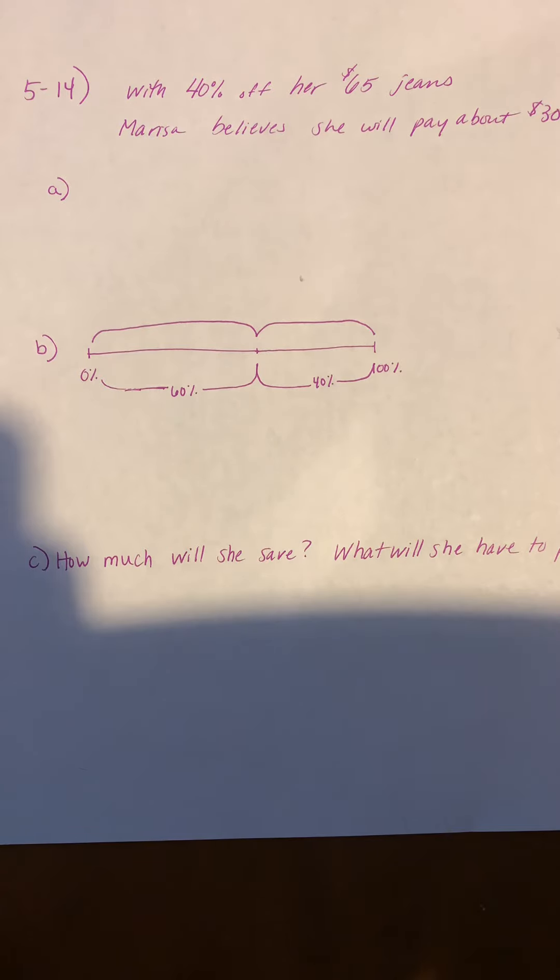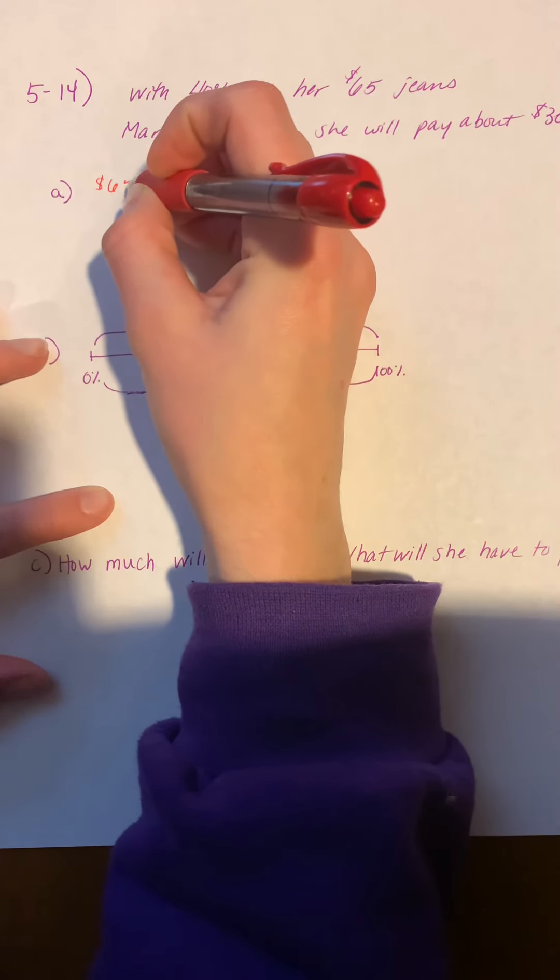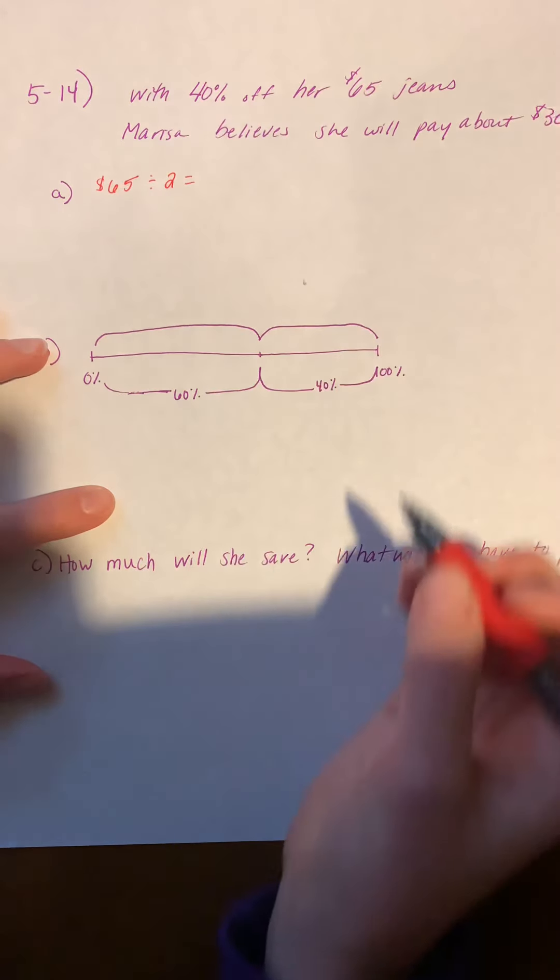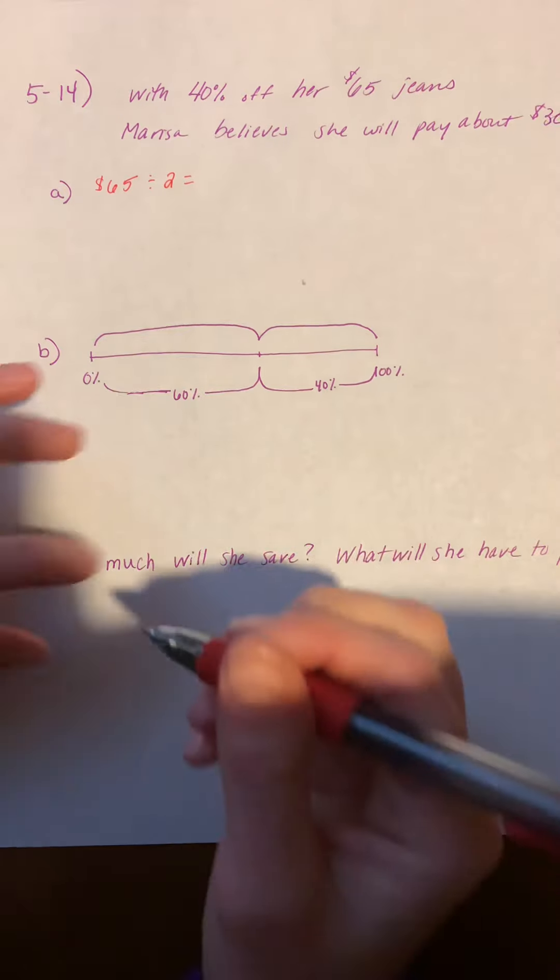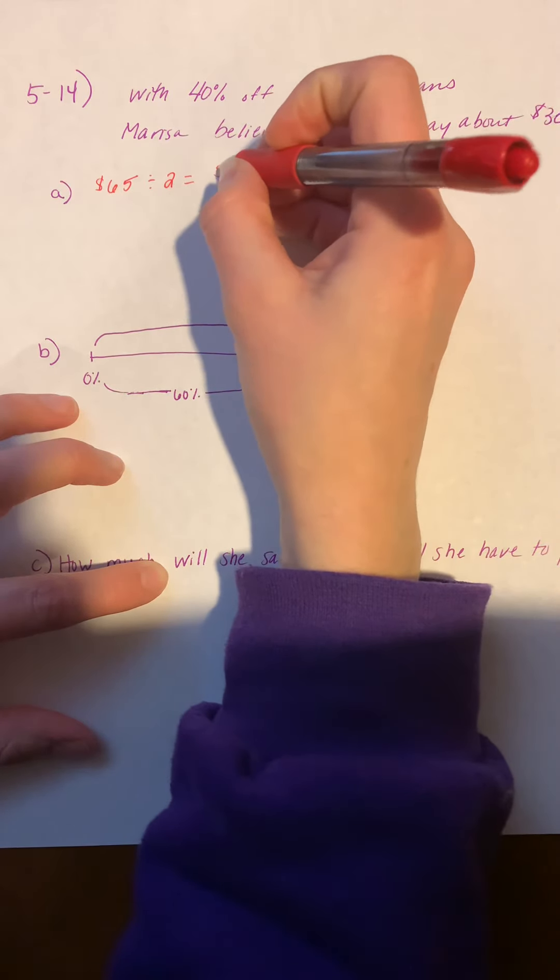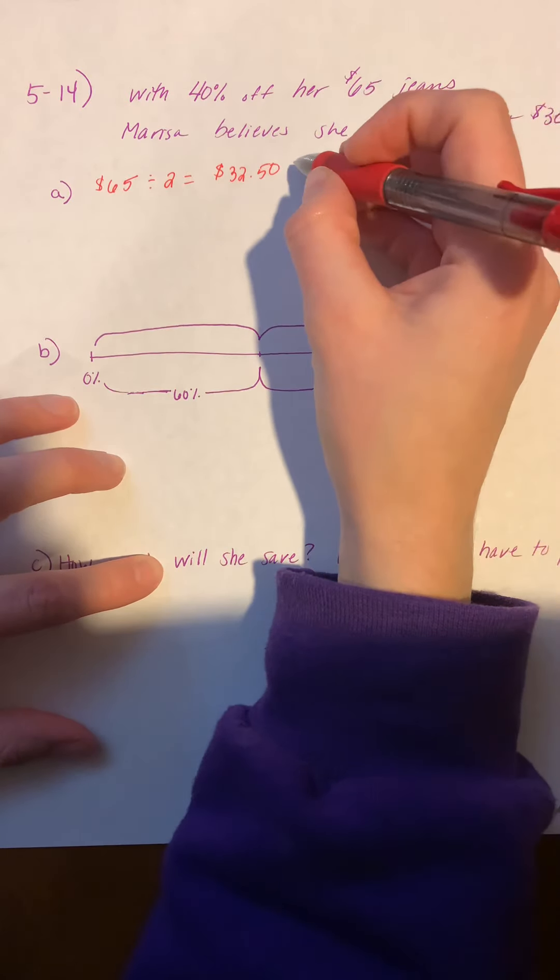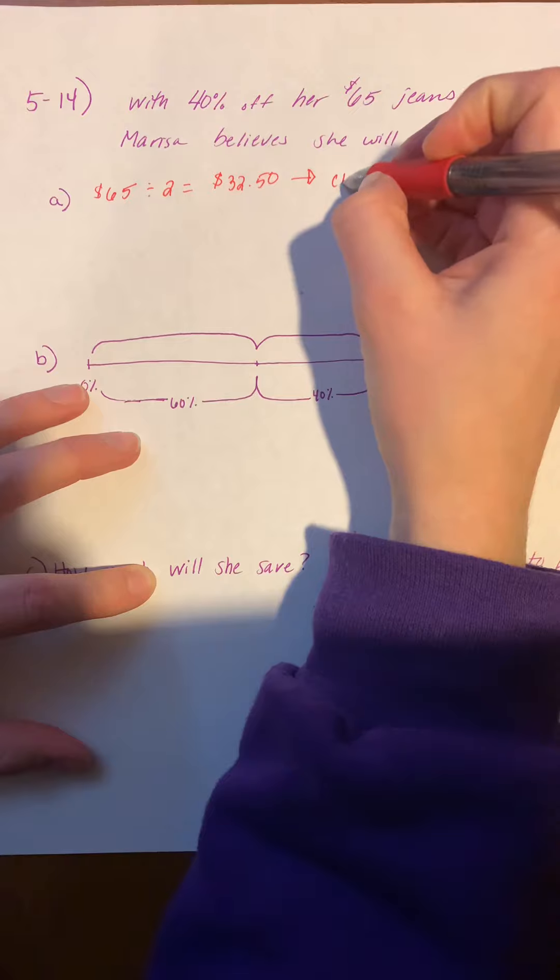If we think about what 50% off would be, let's try to estimate there. So if we're just thinking about what half off of her jeans would be, I'm going to be taking my $65 and dividing that by 2. What do you get when you divide $65 in half? You should get $32.50. So when we're thinking about her estimating, she is right in that it is close to $30.